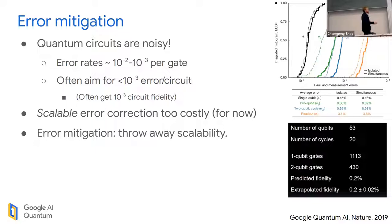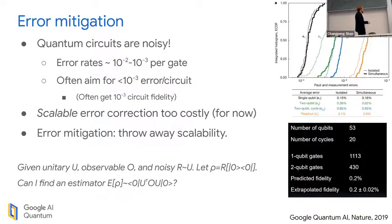Error mitigation - the broadest definition I give is anything that you can do now that doesn't scale. A more rigorous definition from Denny Ying: if I have a unitary U, an observable O, and I replace that unitary with its noisy version R, the question is can I extract the noiseless expectation value from the state given?